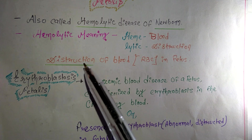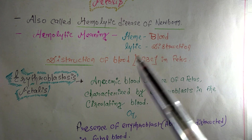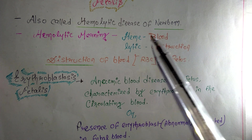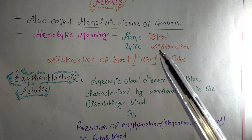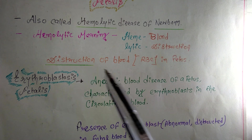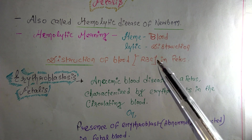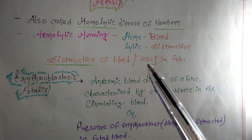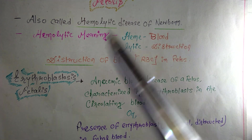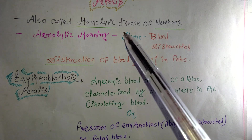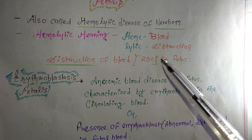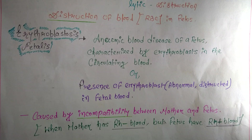So hemolytic means destruction of blood — basically destruction of RBCs. In this condition, the RBCs in the fetus circulation are destroyed. Hemolytic disease means destruction of RBCs in the fetus or newborn.